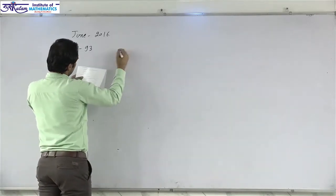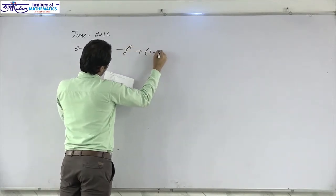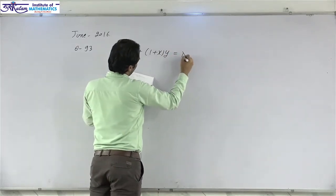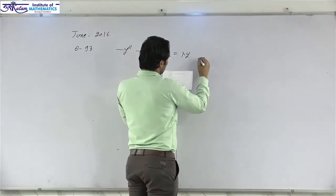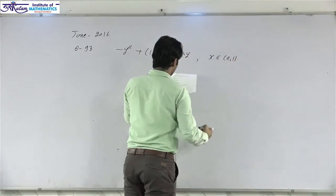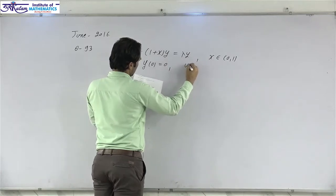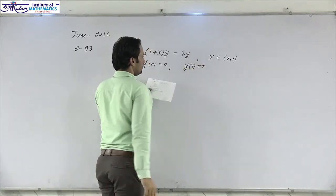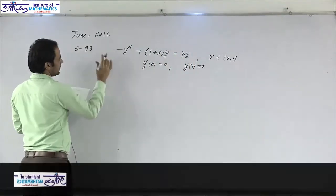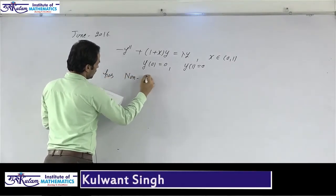The problem is: minus y double dash plus (1 + x)y equals lambda times y, with x belonging to 0 to 1, and boundary conditions y(0) = 0 and y(1) = 0. This differential equation has a non-trivial or non-zero solution.